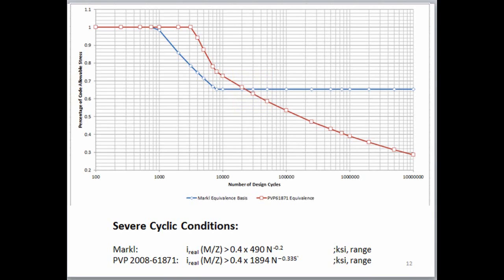We can also note that the PVP 2008-61871 equation gives a percentage allowable equal to 0.8 at around 7,000 cycles, and this is what the code intends. So let's use this red curve to interpret the point at 10,000 cycles. So at 10,000 cycles, when the calculated stress is about 72% of the B31 allowable, the real stress is at about 80% of half the stress to cause mean failure, and that's considered a severely cyclic condition.